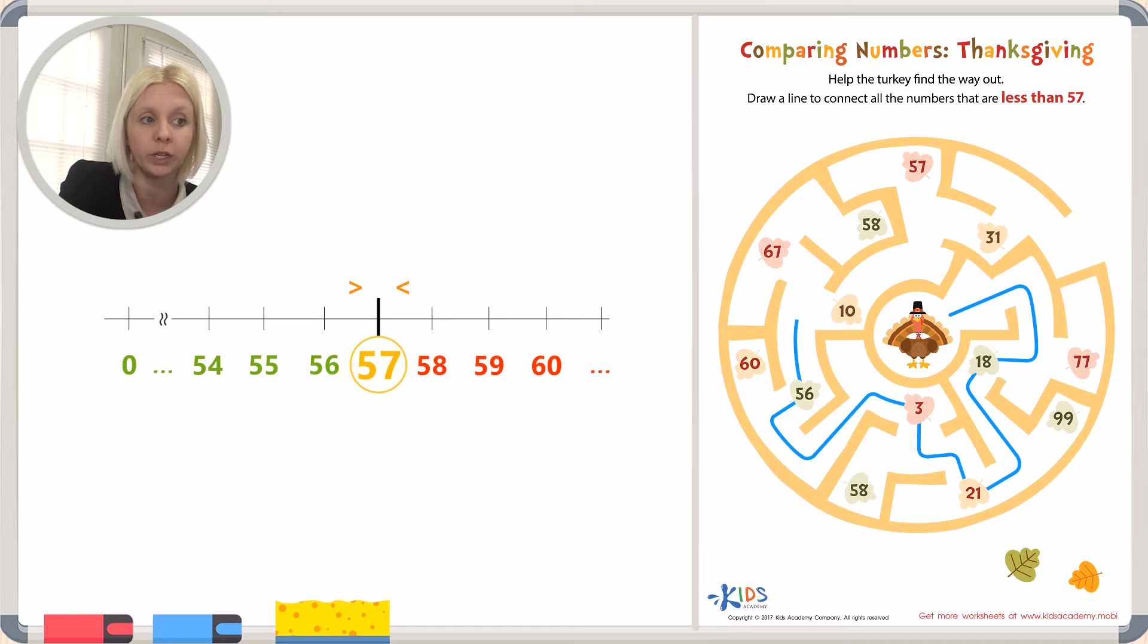Let's keep going around here. We can either go to 10 or 67. 10 is less than, so we're going to go this way. We're going to keep going around. You're doing so good.